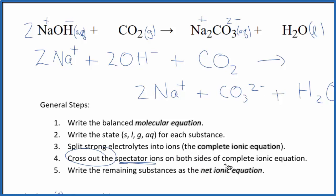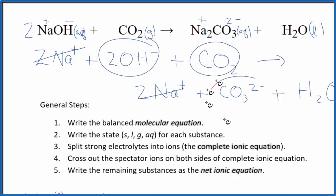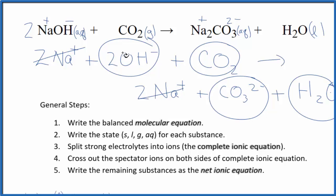Now we can cross out the spectator ions — they're on both sides of the complete ionic equation. I can see in the reactants I have two sodium ions, and in the products, two sodium ions. Cross them out. Everything else is unique, so this is the net ionic equation for NaOH plus CO2. I'll clean it up and write the states in — here is our net ionic equation.